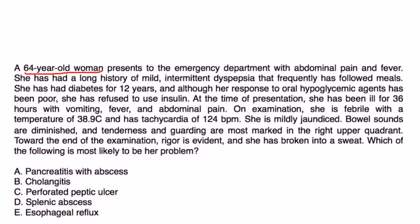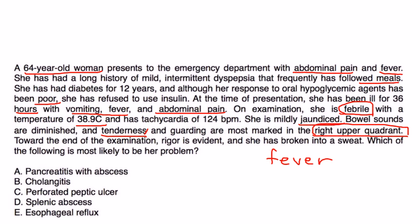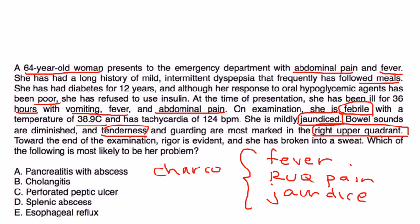A 64-year-old woman presents to the emergency department with abdominal pain and fever. She has had a long history of mild intermittent dyspepsia that frequently has followed meals. She has diabetes and her response to oral hypoglycemic agents has been poor. She has refused to use insulin. At the time of presentation, she has been ill for 36 hours with vomiting, fever, and abdominal pain. On exam, she is febrile with a temperature of 38.9 and tachycardia. She is mildly jaundiced, bowel sounds are diminished. Tenderness and guarding are most marked in the right upper quadrant. Toward the end of the exam, rigor is evident and she has broken into a sweat. Which of the following is most likely to be her problem? Well, she's got fever, she's got right upper quadrant pain, and the question also tells you that she has jaundice. So this is Charcot's triad. And if it is Charcot's triad, that's a very strong indication that she has cholangitis. Choice B.